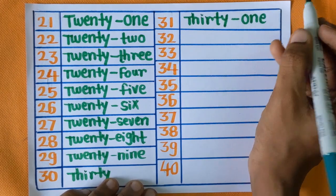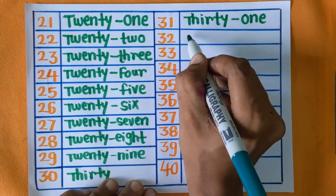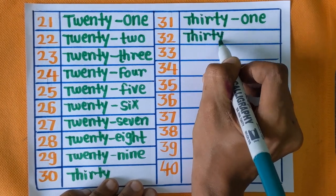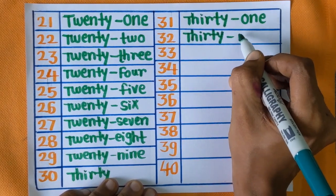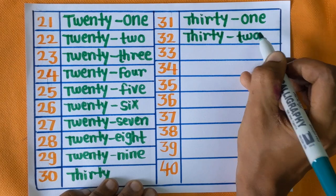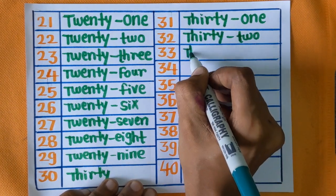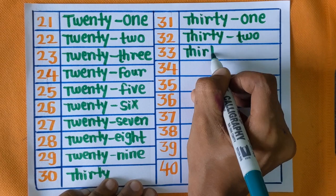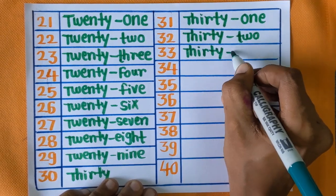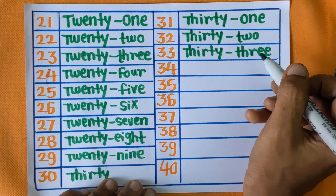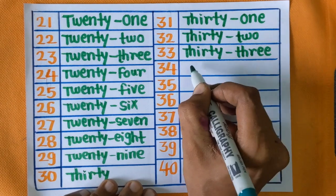Thirty-one: O-N-E, 31. Next is 32: T-H-I-R-T-Y, T-W-O, 32. Next number is 33: T-H-I-R-T-Y, T-H-R-E-E, 33.